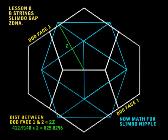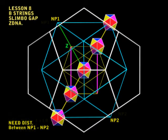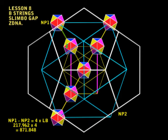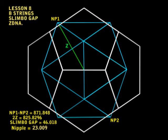Okay, now we have to look for the distance between the two vertices of the icosa np1 and np2. Now for this length, I'm going to take you back to an earlier clip from the earlier videos, and you can see on this video that the length between np1 and np2 will be equal to four times the length between the icosetas, which is lb, and it's 217 pico, and that length comes to 871.848. So now when we take the length of 2z away from that, look what we're left with. We show a slimbo gap of 46 and the nipple is 23.